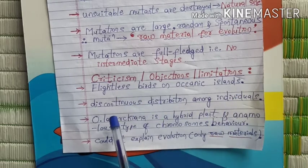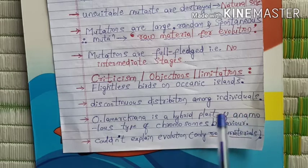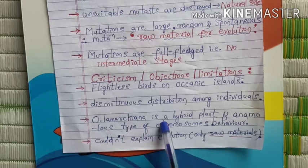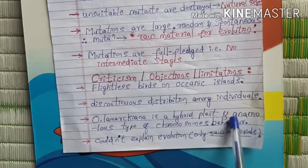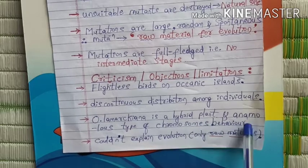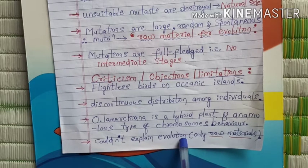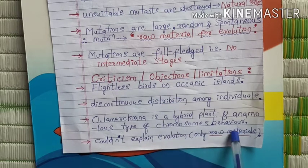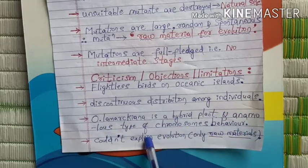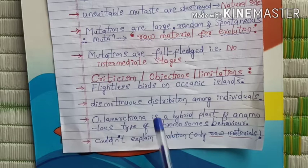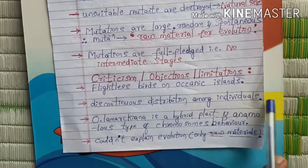The major objection is that Oenothera lamarckiana is a hybrid plant and has an anomalous type of chromosome behavior. So the observations were made on a plant with abnormal chromosomal behavior. One more criticism is that this theory could not fully explain the process of evolution — it only provided the raw material for evolution but could not explain how exactly evolution occurred. These are the four major criticisms of Mutation Theory.